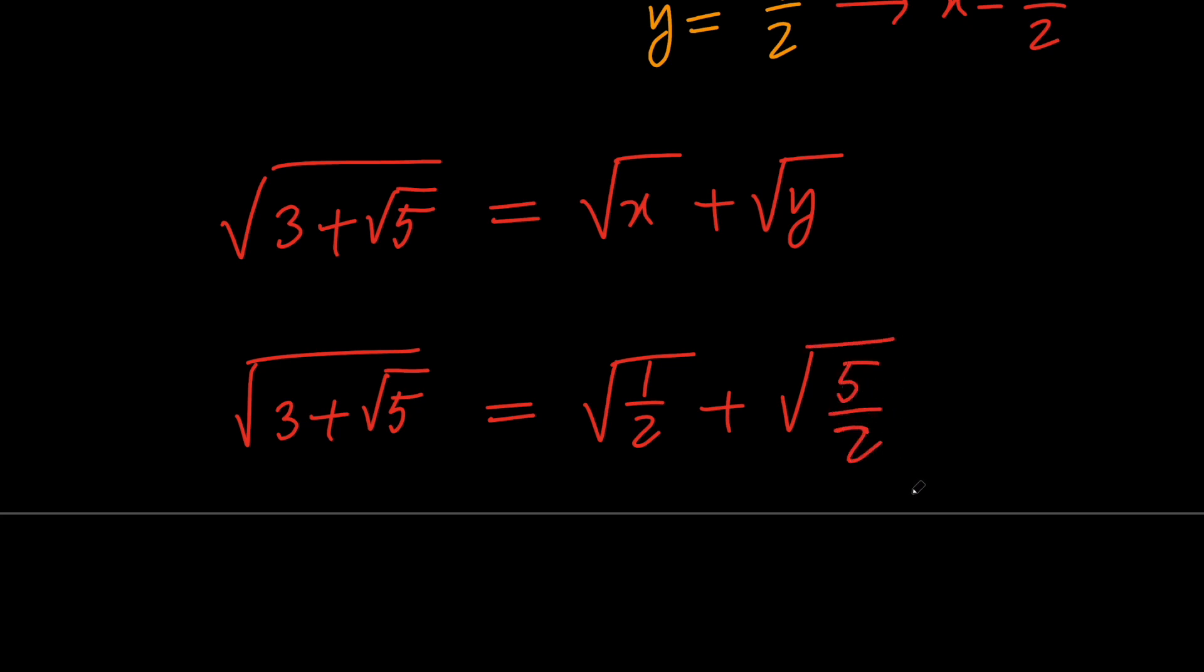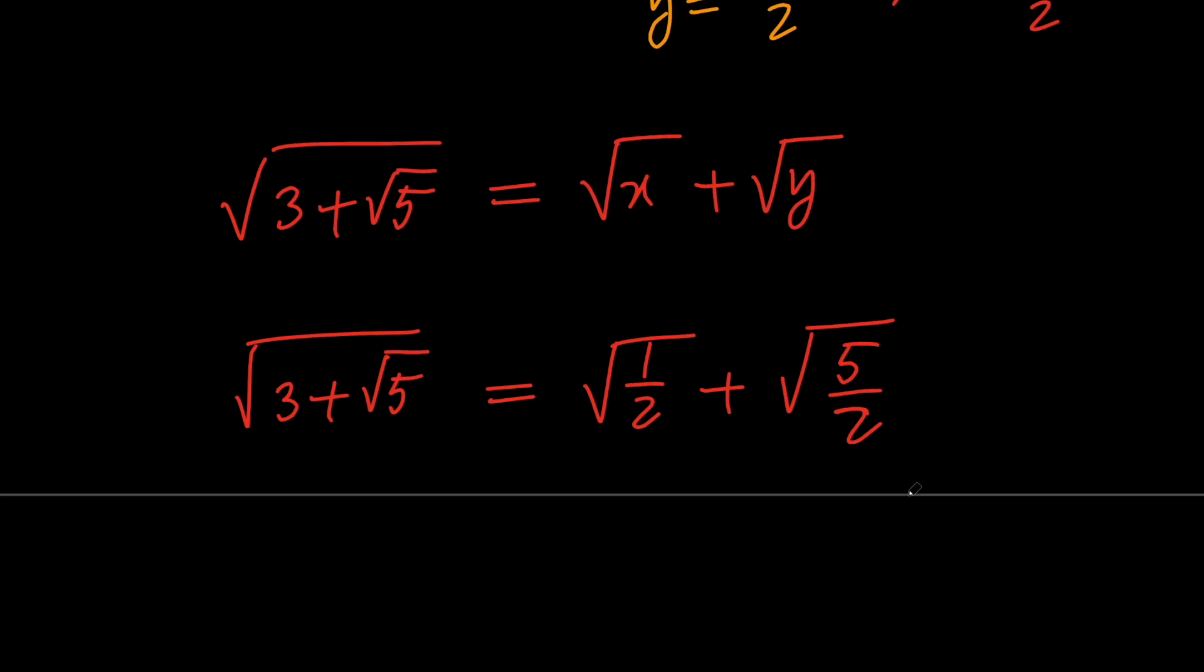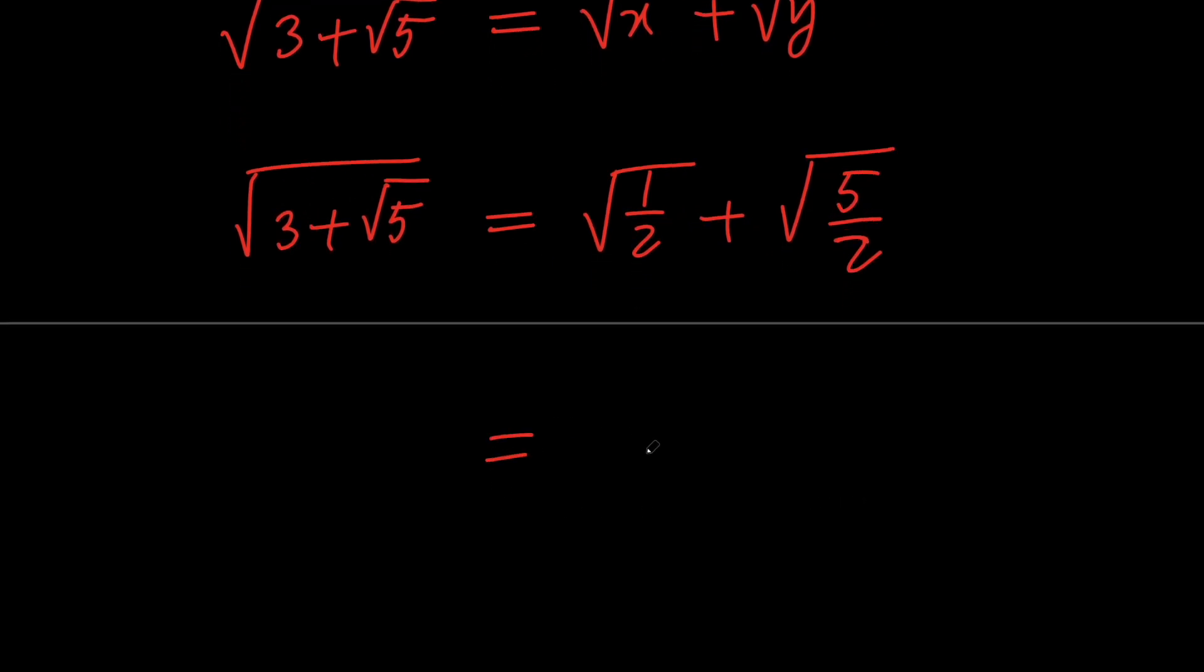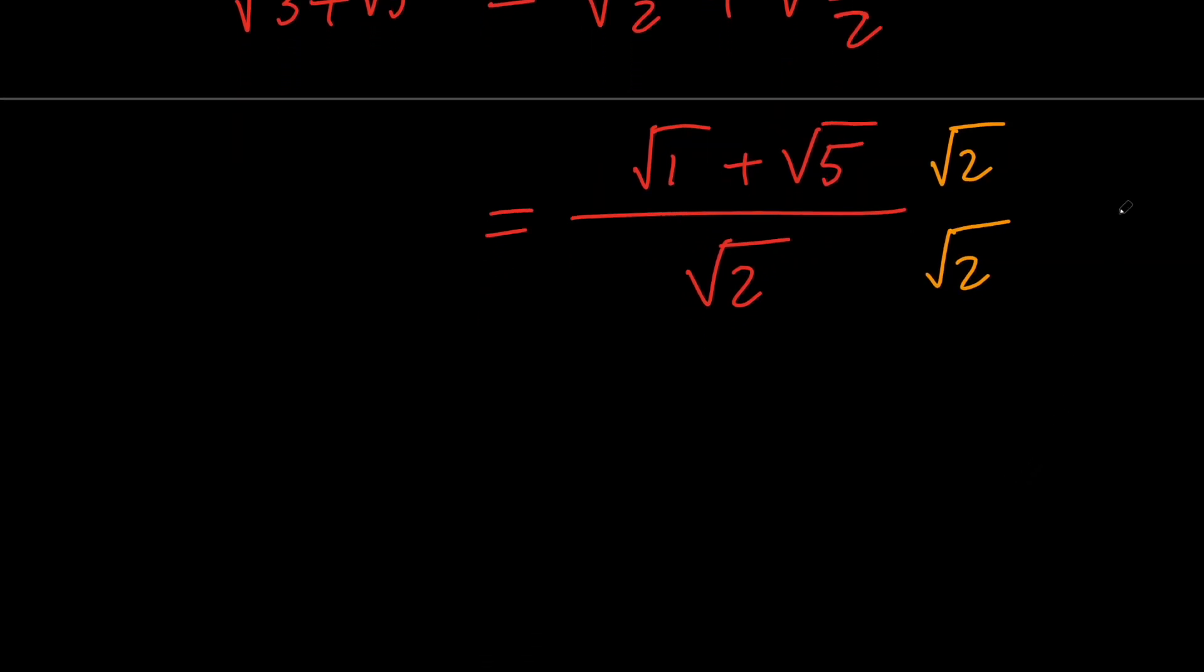Next, in order to simplify this a little bit more, we can go ahead and get a common denominator. So this is going to be root 2 in the bottom, and root 1 plus root 5 on the top. And in order to rationalize this, let's multiply both the top and the bottom by root 2. So we're going to get root 2 plus root 10 over 2.